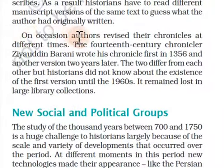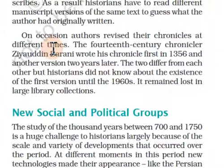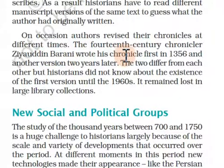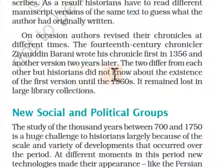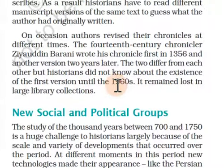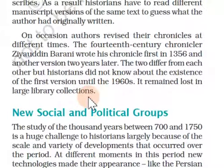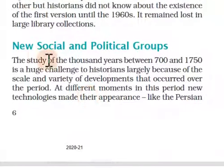On occasion, authors revised their chronicles at different times. The 14th-century chronicler Ziauddin Barani wrote his chronicle first in 1356 and then another version two years later. The two versions differ from each other, but historians did not know about the existence of the first version until the 1960s — it remained lost in large library collections.